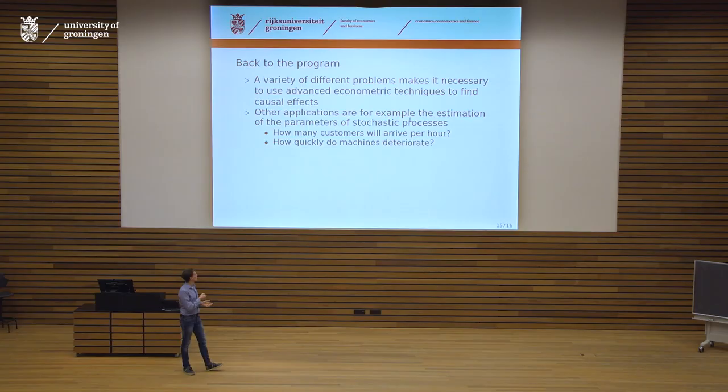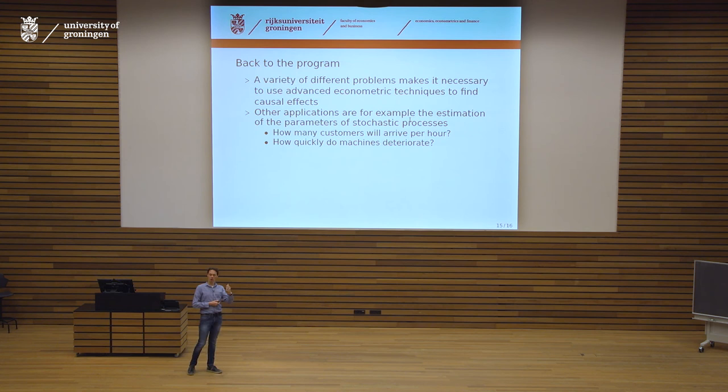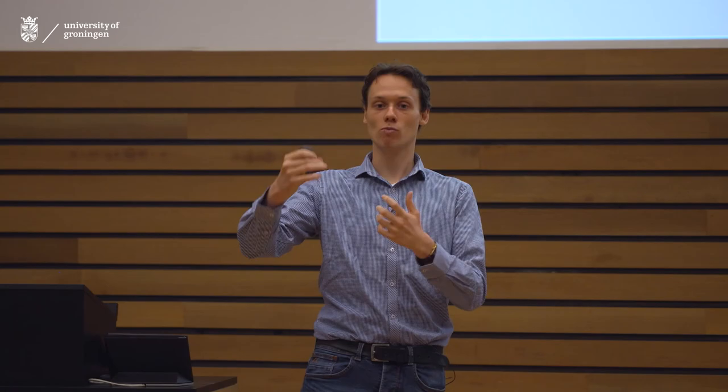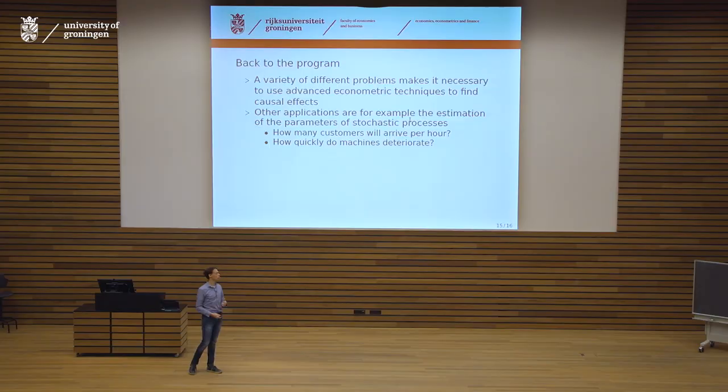Another application example is the estimation of parameters of stochastic processes. In operations research, people want to find optimal maintenance schemes for machines, or the optimal number of checkouts. For that, you need to know how quickly machines deteriorate or how many customers arrive per hour. Estimating this deterioration rate or customer arrival process is an econometric question — another application where econometrics plays an important role.